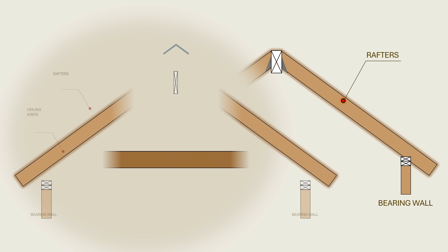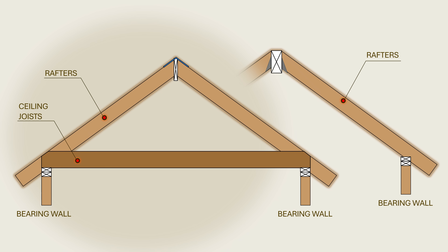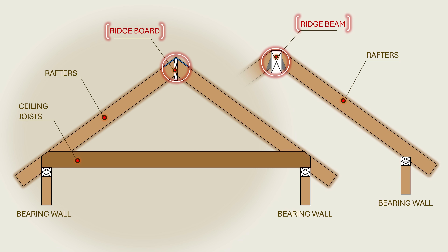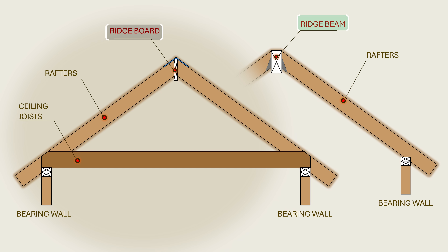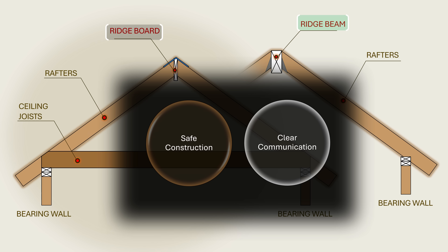There are very few elements that invite as much confusion as the distinction between a ridge board and a ridge beam in the design and construction of wood-framed structures. Both members occupy the peak of a gable roof where they run horizontally along the ridge line that joins the upper ends of opposing rafters. To an untrained eye, they may appear interchangeable. However, in principle, they are very different, and confusing them in practice can lead to costly mistakes in construction or even catastrophic failure under code-level gravity loading conditions. Therefore, understanding the distinction between the two is essential for both safe construction and clear communication in design practice.